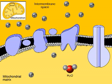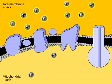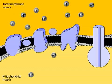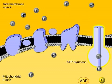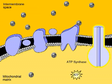The electron transport chain has used the energy of moving electrons to pump hydrogen ions into the intermembrane space. This buildup of hydrogen ions, like water behind a dam, stores the potential energy that was originally in the bonds of glucose molecules. The backed-up hydrogen ions give up their energy when they diffuse through a special protein in the membrane called ATP synthase. As hydrogen ions flow down their concentration gradient, ATP synthase captures their energy to make ATP.